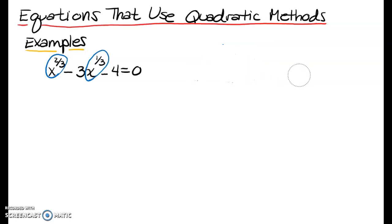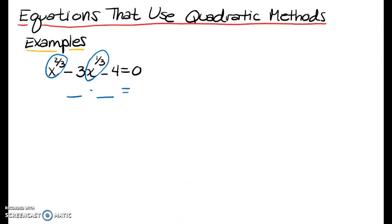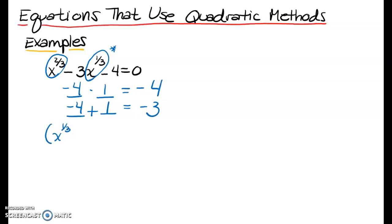We're going to use quadratic methods to solve this as well. Whenever I have weird exponents — like powers of 4 or rational exponents — I hope I can use the zero product property when solving. For this one, let's see if we have factors of negative 4 that add to negative 3. Negative 4 and positive 1 add to negative 3, so when I factor this I get x to the one-third minus 4 times x to the one-third plus 1, equals 0.